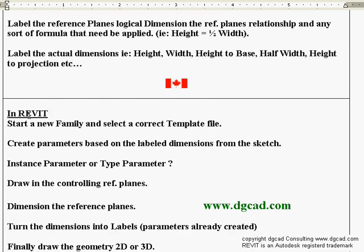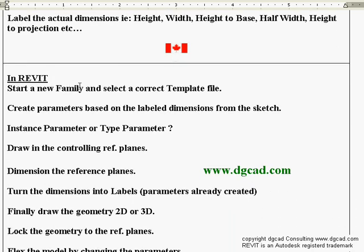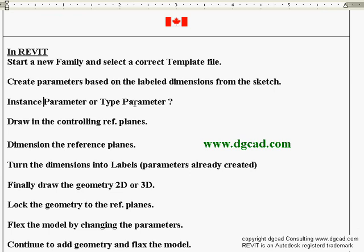After sketching and labeling on paper, go into Revit and start a new family selecting the correct template file. Then create parameters based on the labeled dimensions from the sketch: height, length, distance from floor, thickness, leg diameter — all the information from above. We haven't drawn anything yet; we've just created parameters. Decide whether each is an instance parameter or type parameter — instance changes just one, type changes all.